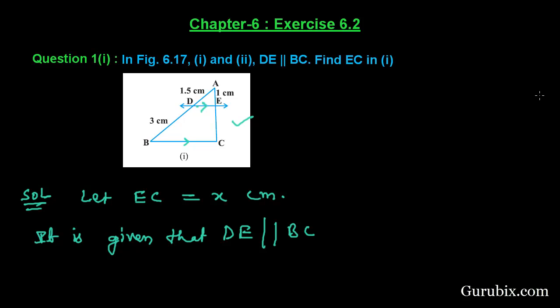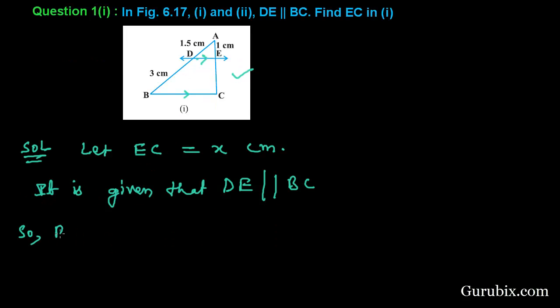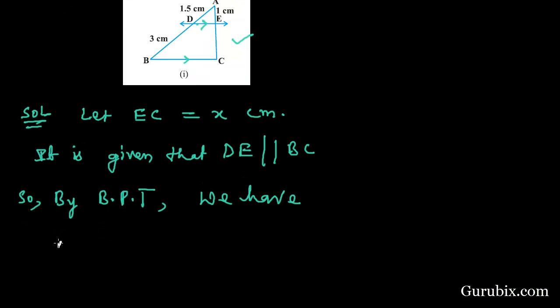So by BPT, this means Basic Proportionality Theorem, we have AD over DB equals AE over EC.